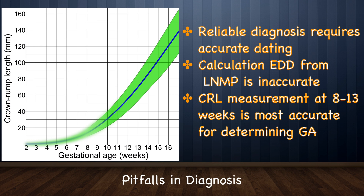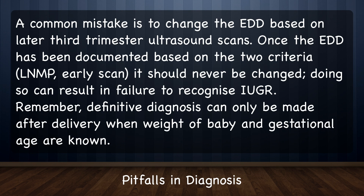Reliable diagnosis of IUGR is heavily dependent on accurate dating in early pregnancy. Calculation of EDD from last normal menstrual period is highly inaccurate, whereas sonographic evaluation at 8 to 13 weeks — that is, CRL measurement — is the most accurate method of establishing gestational age. A common mistake is to change the EDD based on a later third-trimester ultrasound scan. Remember: once EDD has been documented based on a reliable LMP and early scan, it should never be changed. Doing so can result in failure to recognize IUGR. Remember, definitive diagnosis can only be made after delivery when the weight of the baby and gestational age are known.